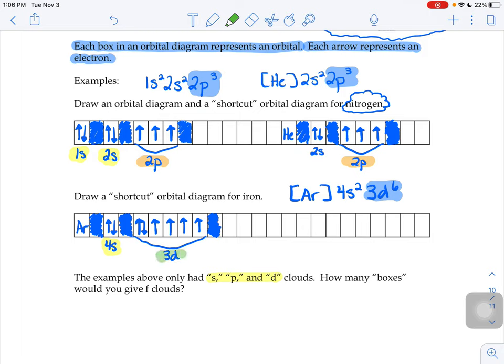And then the D's, there's five different ways to draw D's. So they got five boxes. If I were to give you one that had F shaped clouds, seven.